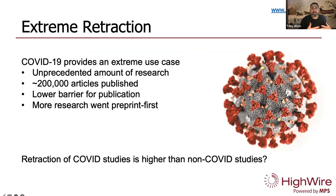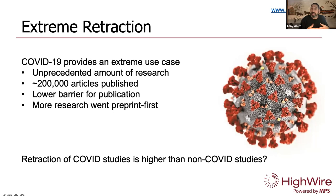I want to introduce the topic of retracted science with an extreme case that many of you may be familiar with. The sudden emergence of the COVID-19 global pandemic in the first quarter of 2020 was quickly followed by a flurry of research papers hoping to provide useful insights to medical professionals and policymakers. Some estimate the number of COVID articles published at around 200,000. Many of the papers were posted as preprints, which at the time was a relatively new phenomenon for biomedicine.